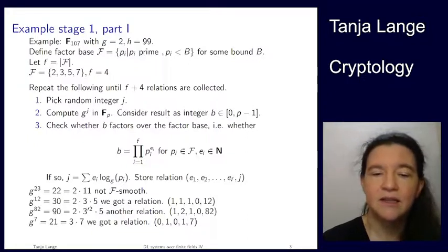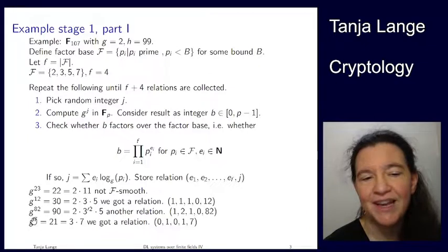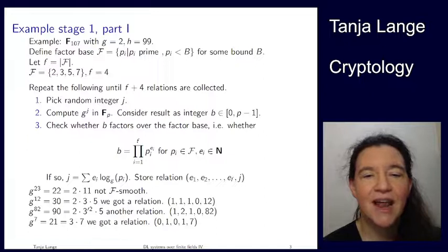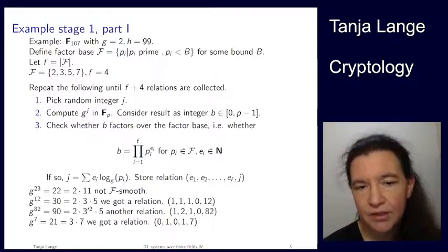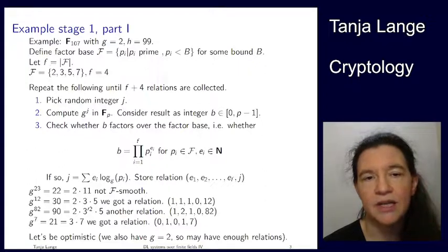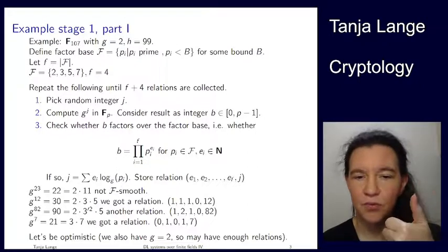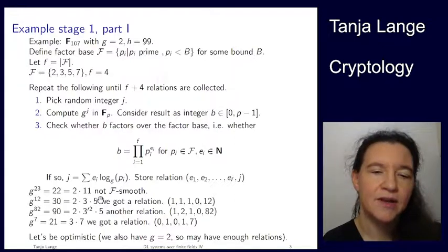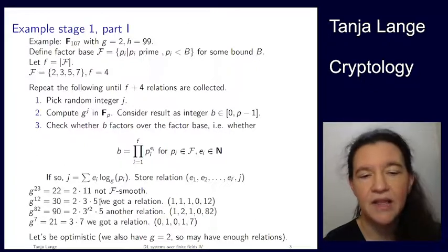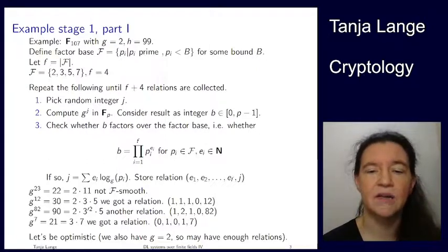The relation from j=7 gives vector (0, 1, 0, 1 | 7). This is a good example in that it includes the 7, though it happened by luck. This gives us only 4 relations — not f+4=8 — but I'm feeling optimistic. Also note that since g=2 and log base g of 2 is just 1, and from these relations we can derive logs of 3, 5, and 7 in sequence. So the system should be solvable.